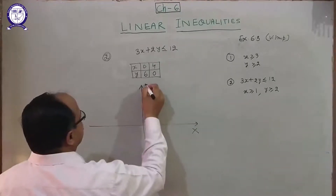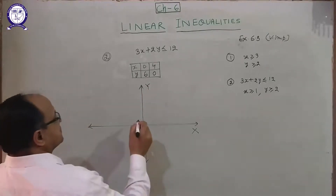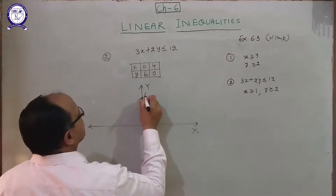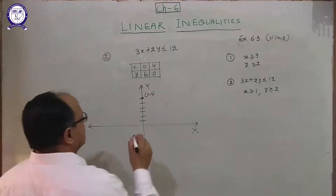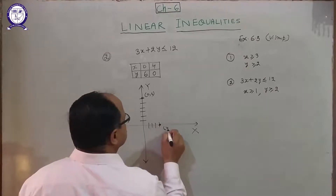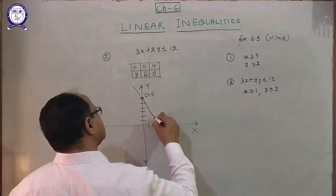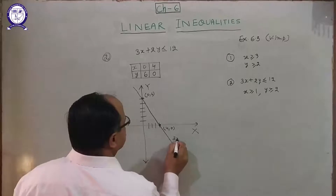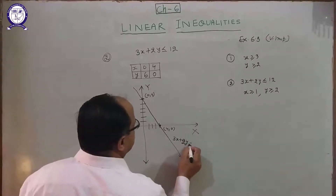Mark the x-axis and y-axis. The point (0, 6): count 1, 2, 3, 4, 5, 6 — this is 0, 6. And 1, 2, 3, 4 — this is (4, 0). Draw the line connecting them. This is the graph of 3x plus 2y equals 12.